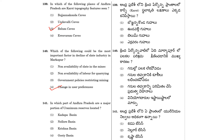Question 141: In which part of Andhra Pradesh are a major portion of uranium reserves located? The answer is the Kadapa Basin. So 141, answer is option 1.